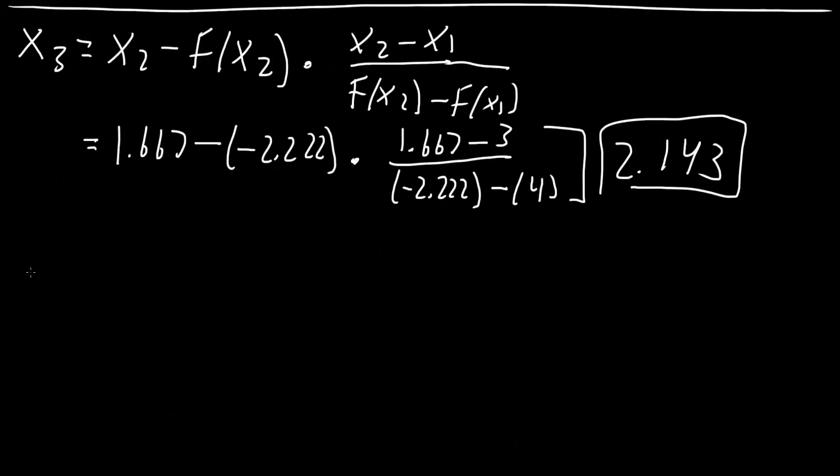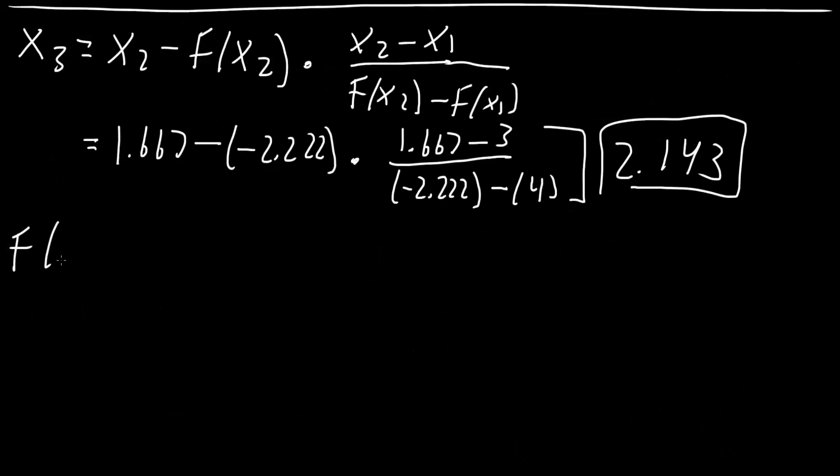And now we will need to do this step here. And so I say f(x3), f(x3) would give us 2.143 squared minus 5, and we would get negative 0.4076. And so now we say f(x3) times f(x2). So 3 and 2, last one was 2 and 1, this is 3 and 2. So 3 was negative, and 2 was also negative, so it's going to be greater than 0.